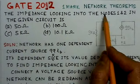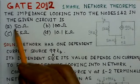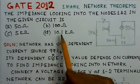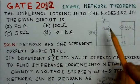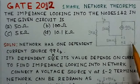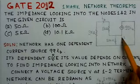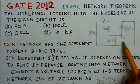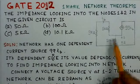The impedance looking into nodes 1 and 2 in the given circuit is — there are 4 options: 50 ohms, 100 ohms, 5 kilo ohms, and 10.1 kilo ohms. These are the options given, and this is the corresponding circuit where we have to find the impedance looking into nodes 1 and 2 as given in this figure.